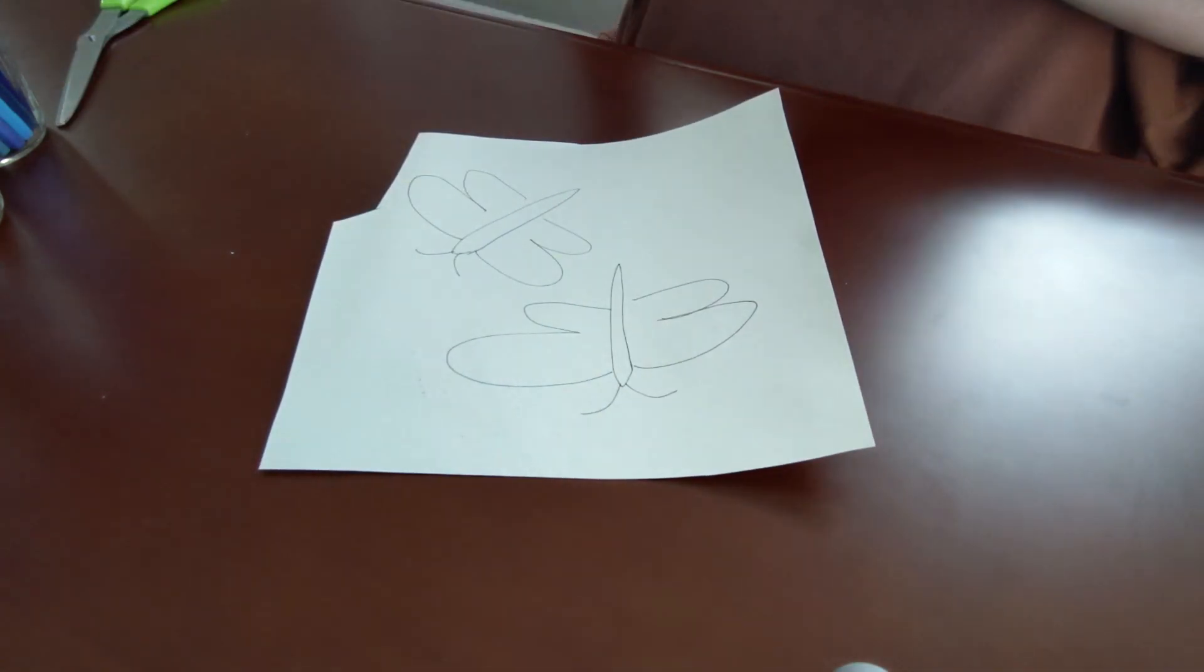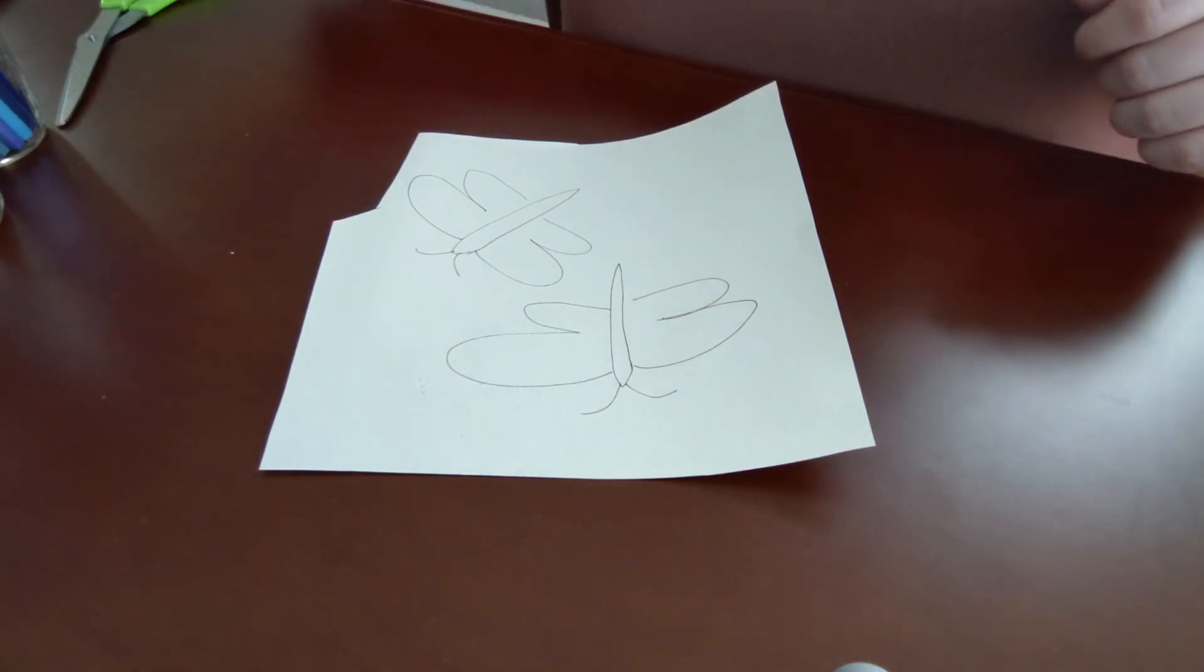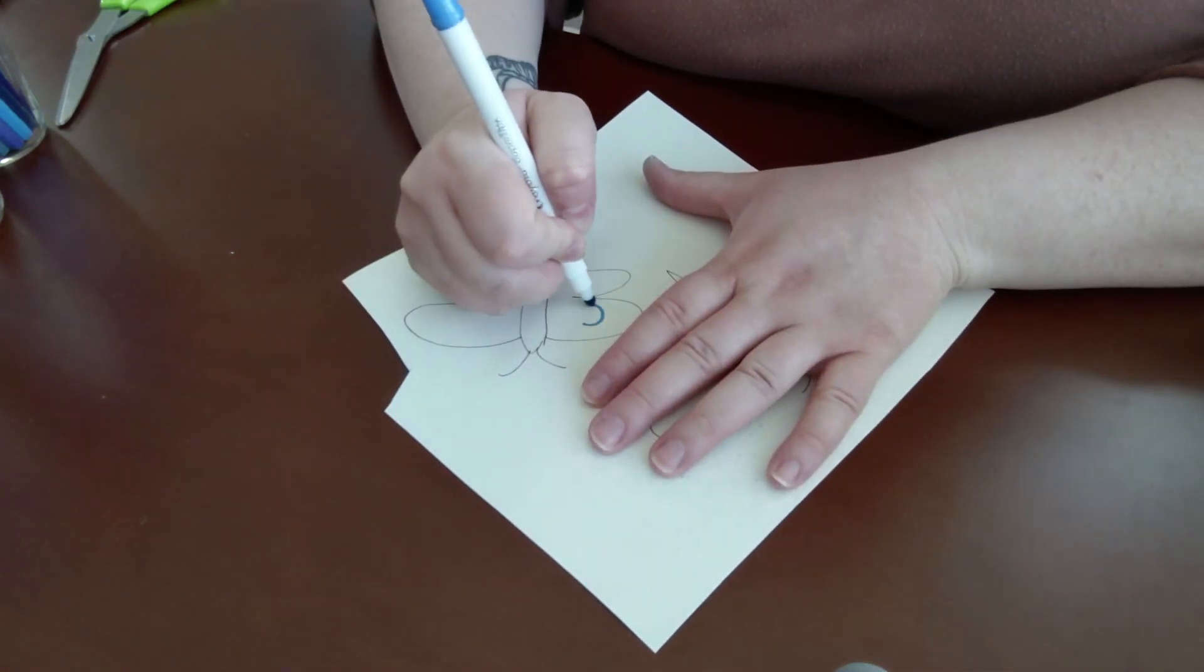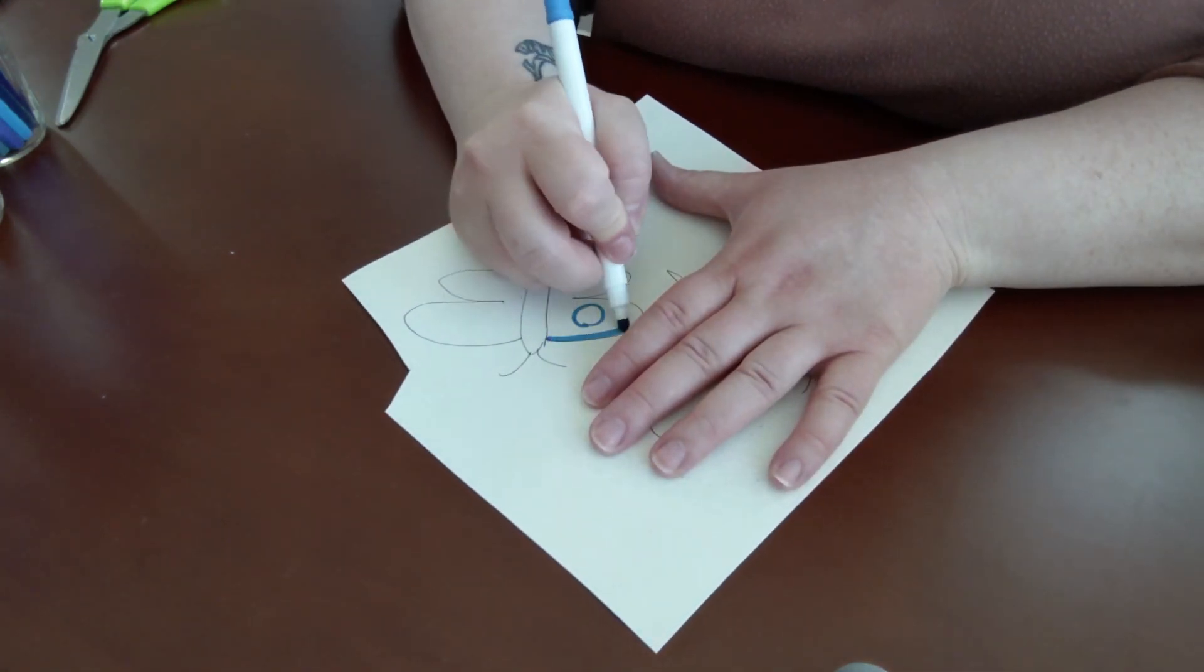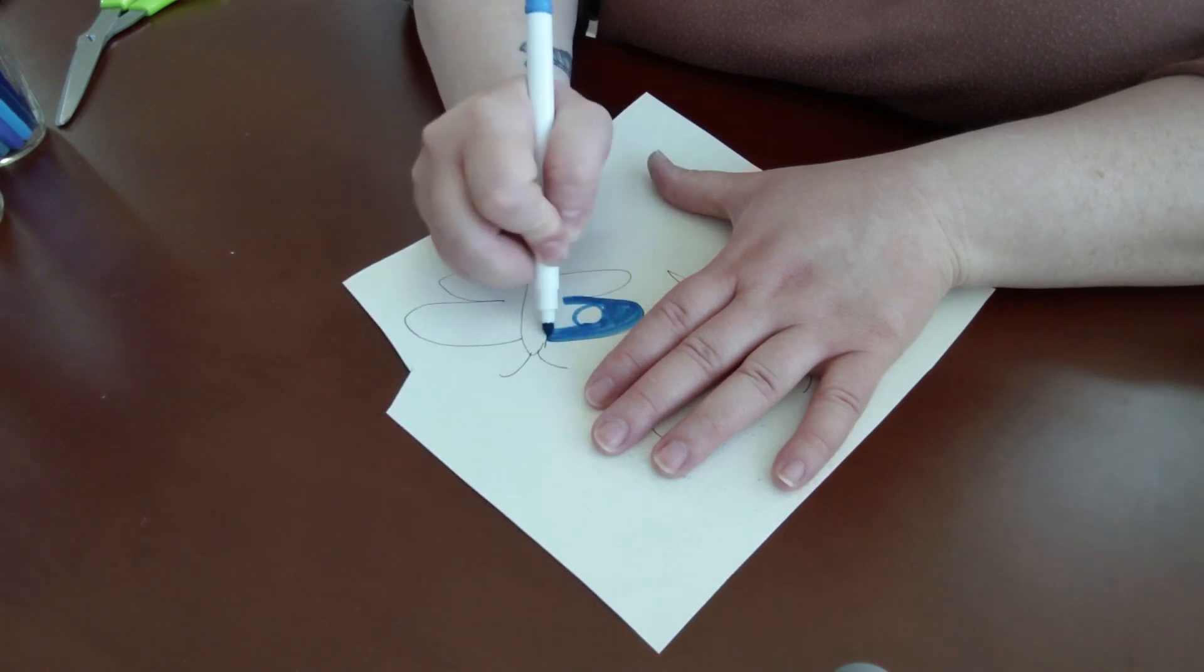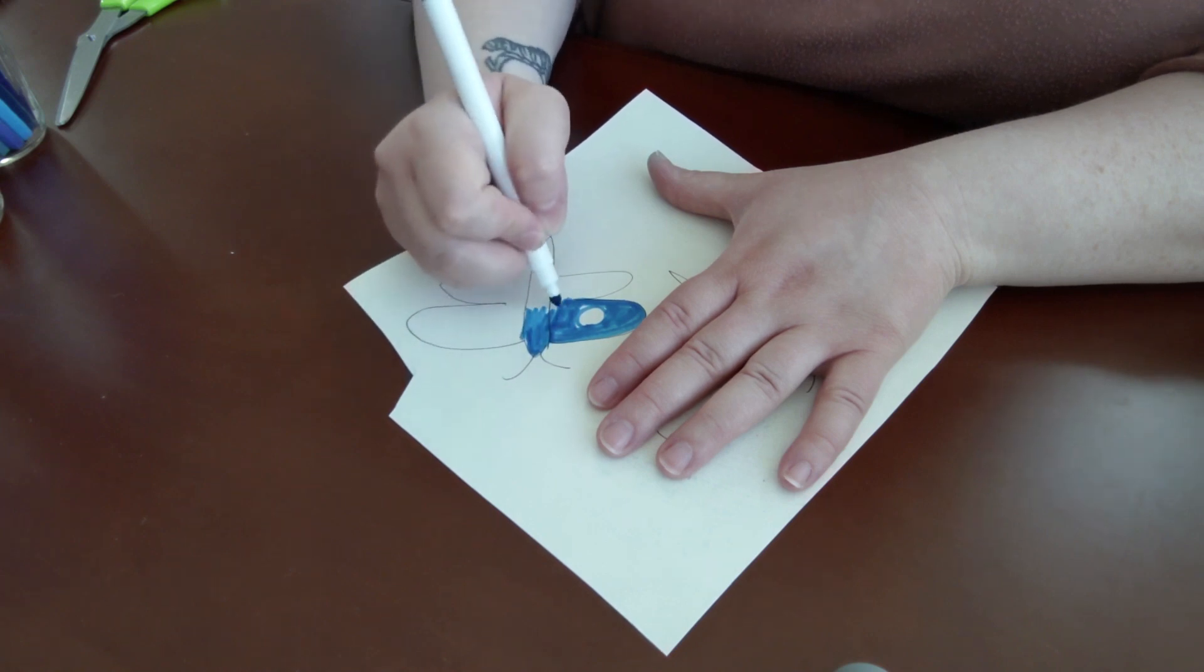So once you're ready to color, you're going to choose a place around your house or maybe your yard where you want to hide your moths. And that's how you're going to choose the colors and textures that you use so that you can try to hide your moth and camouflage it with its surroundings.